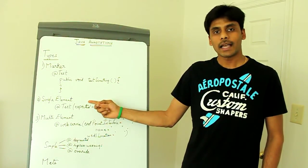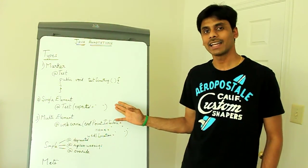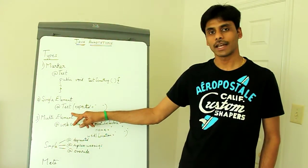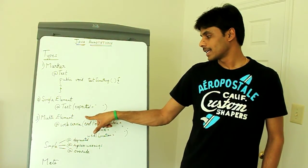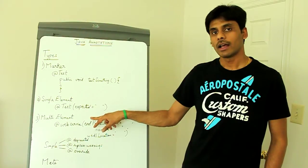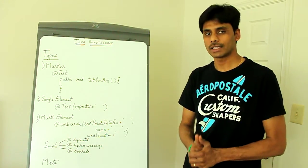The single element annotation, the second type of annotation, has one parameter. A good example again is the at test annotation from JUnit framework, which takes in the expected parameter, which is nothing but the exception you are expecting in your test class.